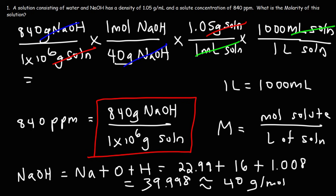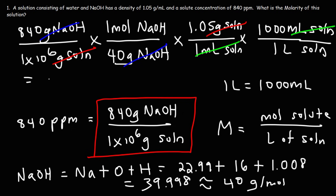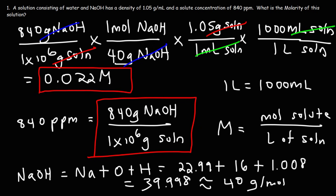So the calculation is 840 divided by 1 times 10 to the 6, divided by 40, then multiplied by 1.05 times 1,000. Multiply all numbers on top and divide by the numbers on the bottom. The answer is 0.022 M, or 0.022 moles of solute per liters of solution. That's how you convert from parts per million to molarity.